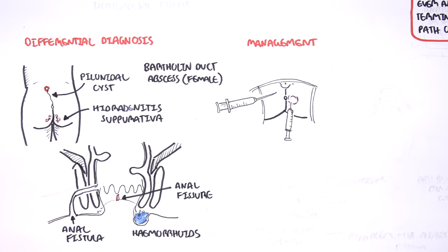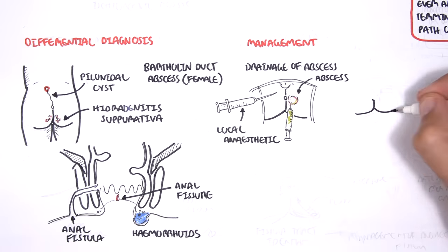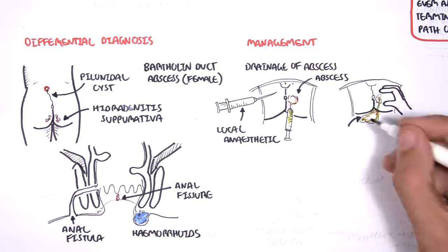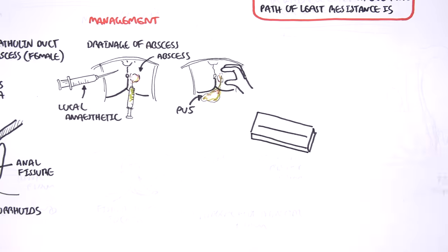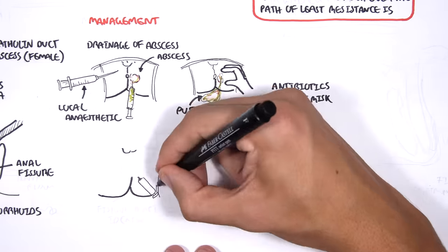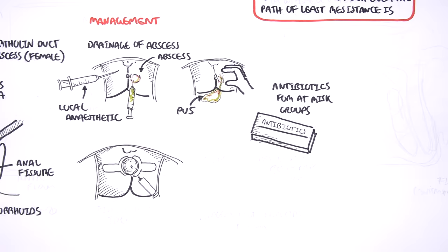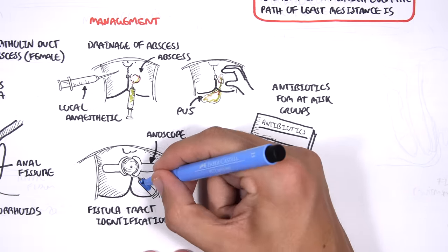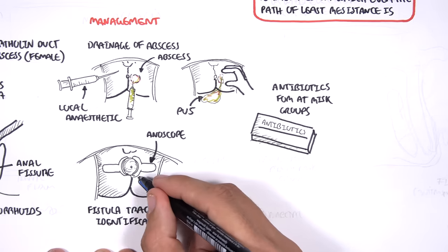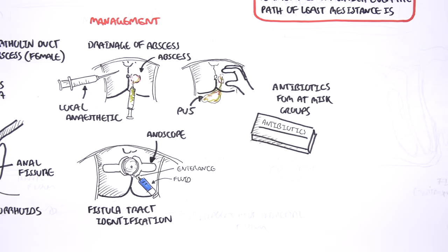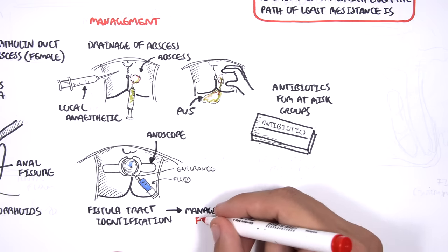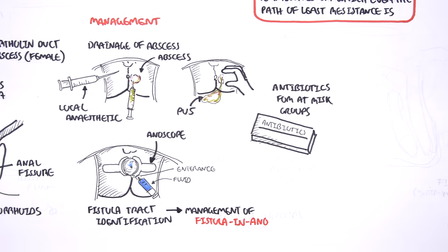Management of anal abscess is basically drainage under local anesthetic. Antibiotics are used for groups at risk. Further, fistulas can be identified using an anoscope by injecting fluid through a visible external opening and seeing where the fluid comes out from within the anal canal. If a fistula is identified, managing the fistula obviously comes with the whole drainage process.